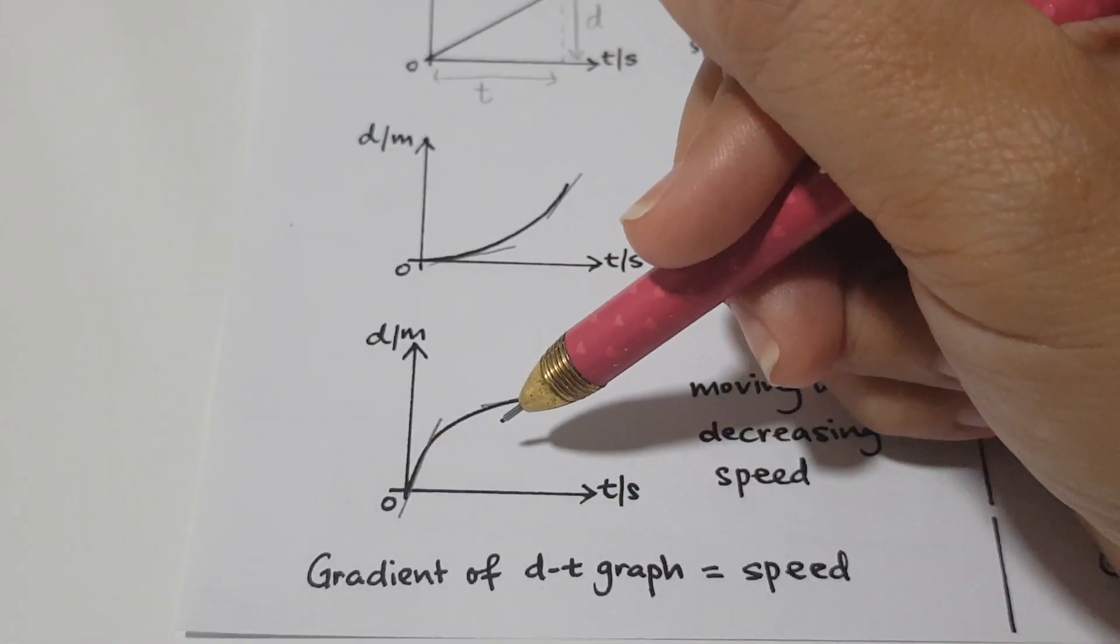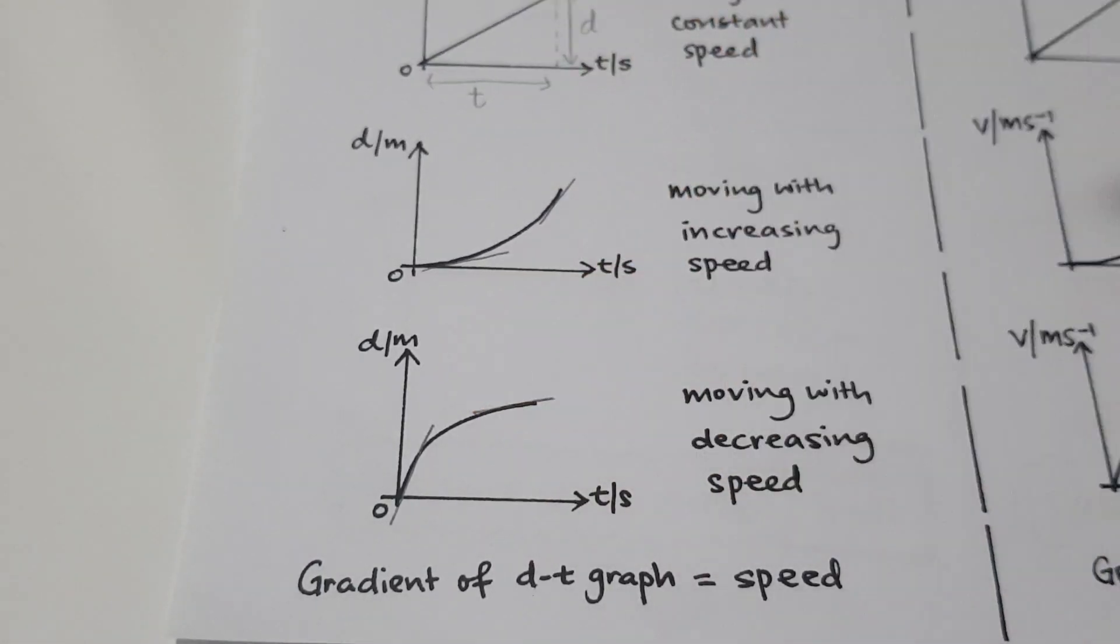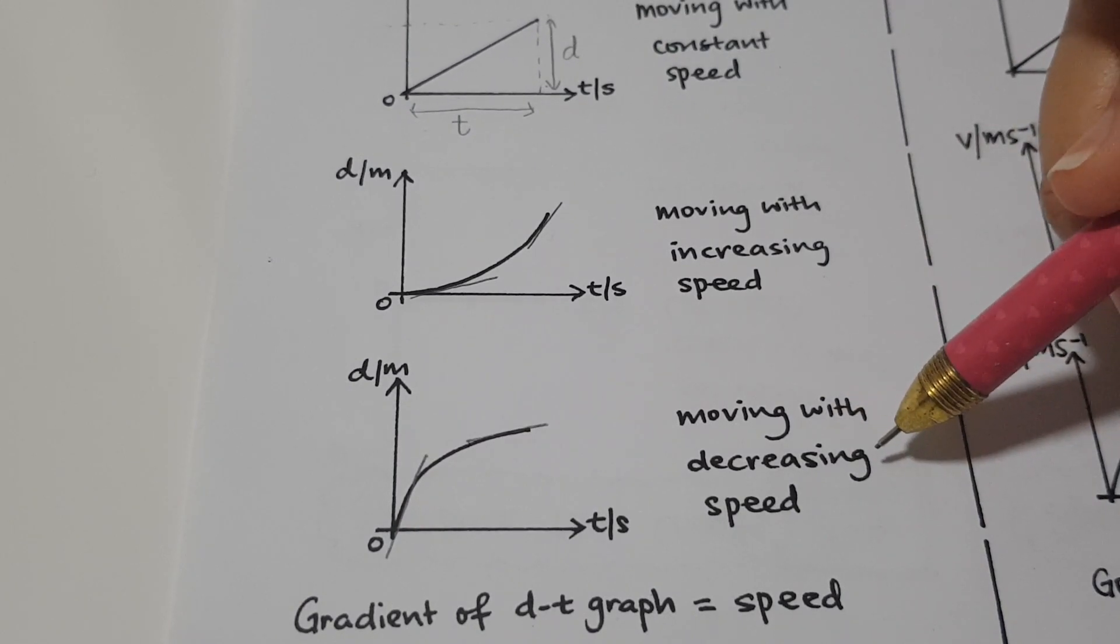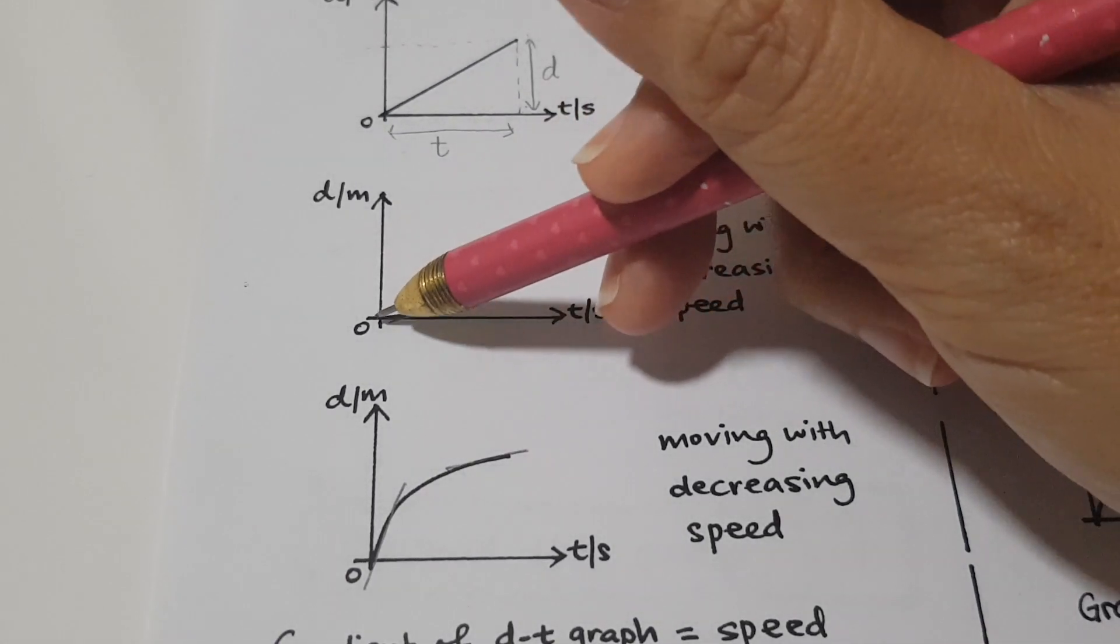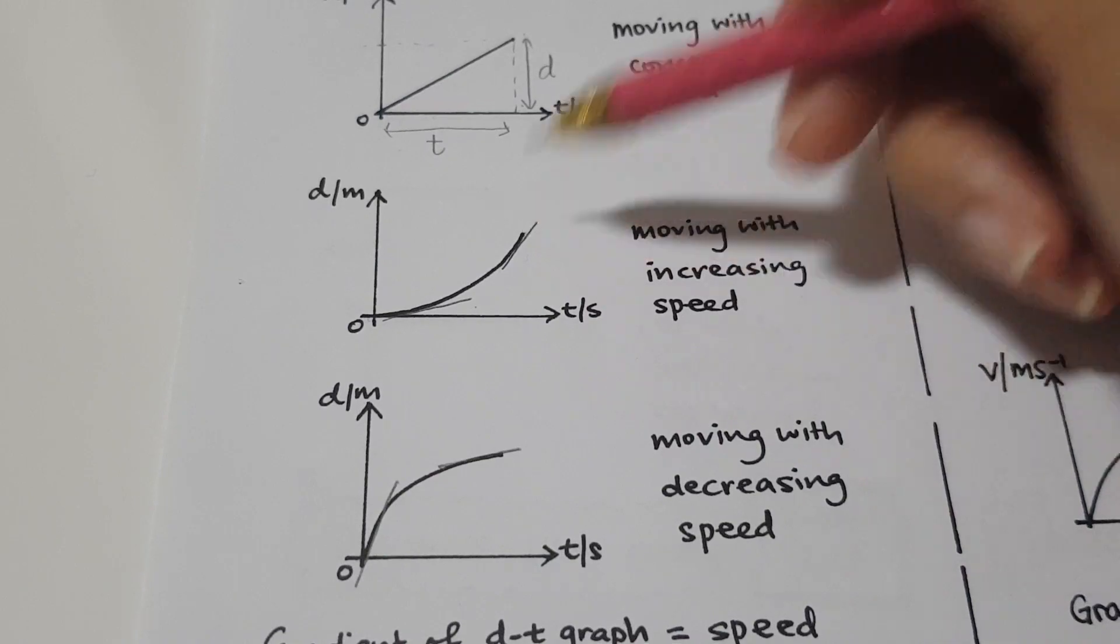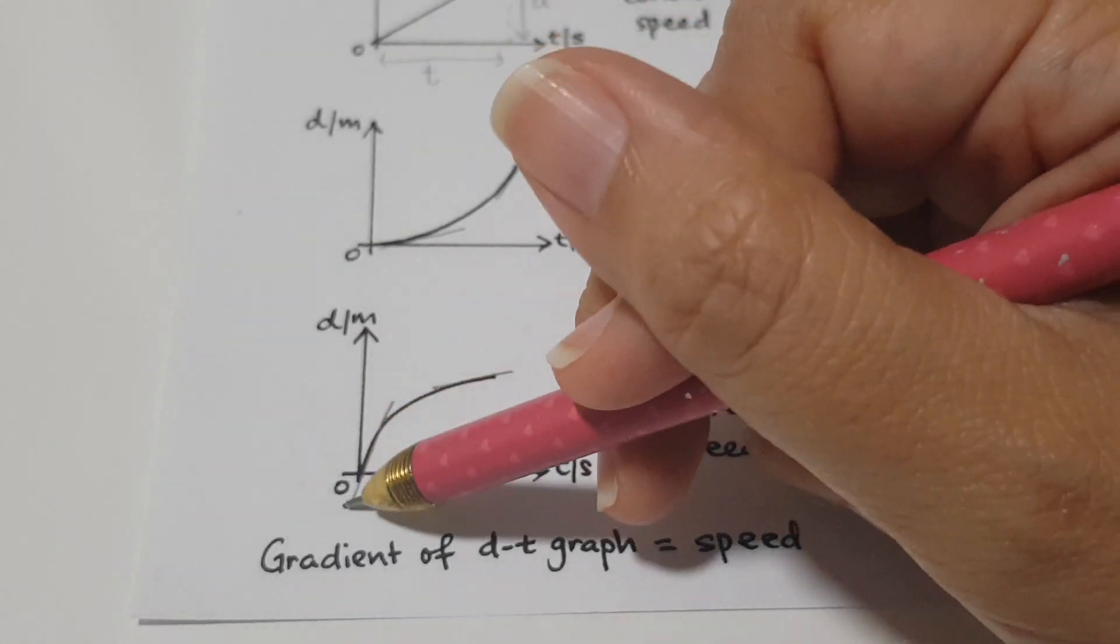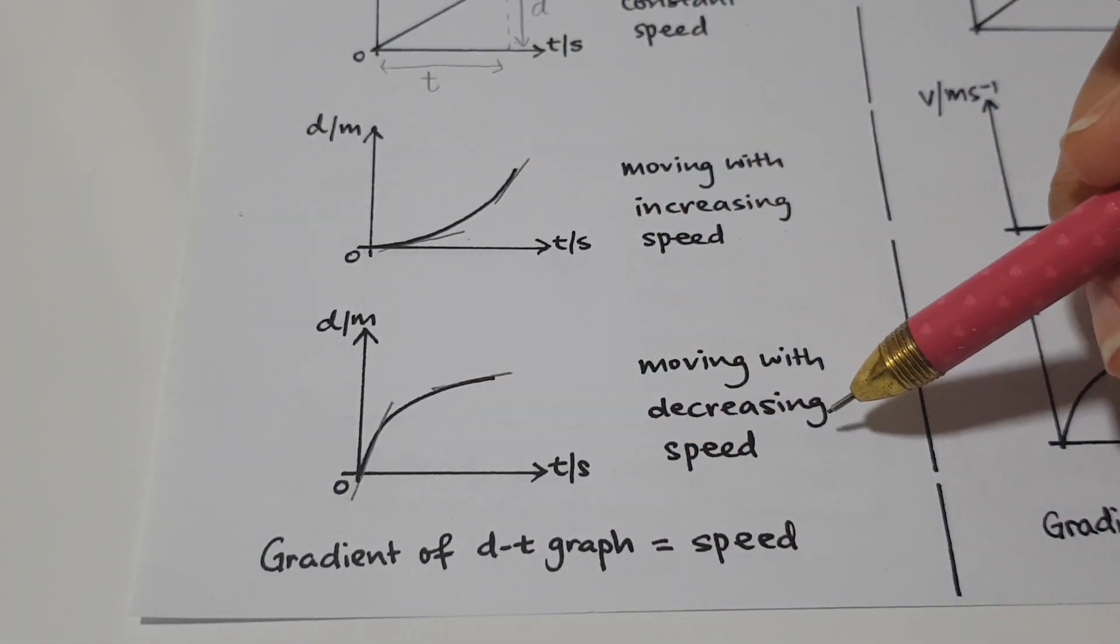And for decreasing gradient, it just means that as it moves, the speed is changing. And how is it changing? It's moving with decreasing speed. So there are two different kinds of curves that we are looking at. One is when it starts with a gentle slope and ends with a steep slope, it's moving with increasing speed. The other one starts with a steep slope and ends with a gentle slope, it's moving with decreasing speed.